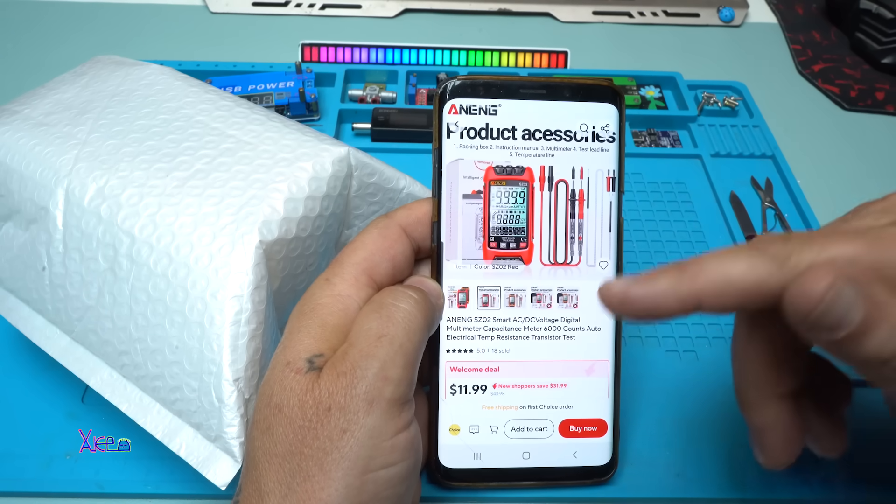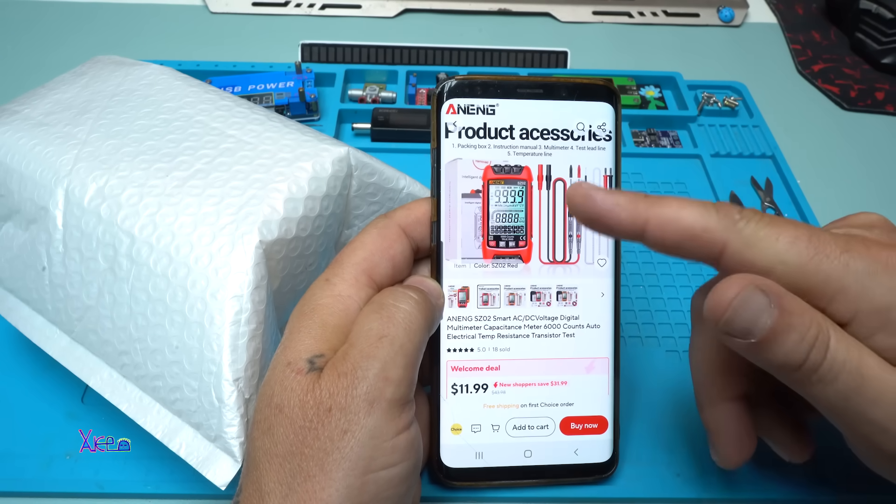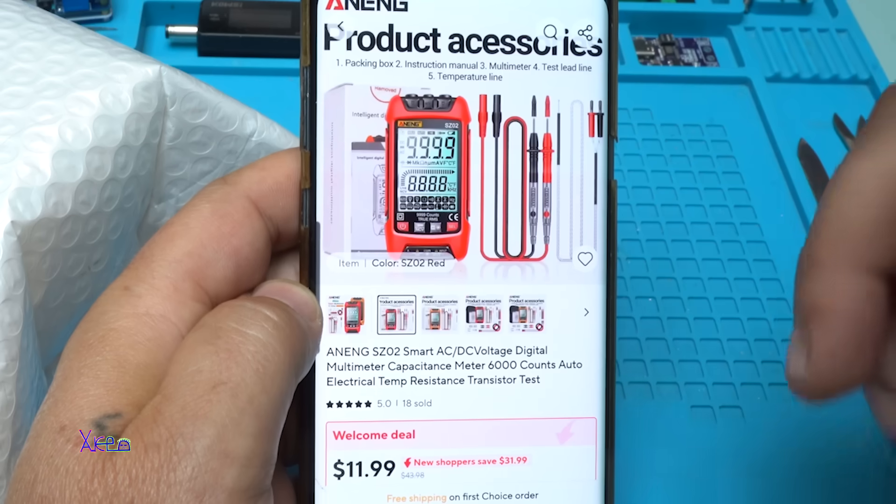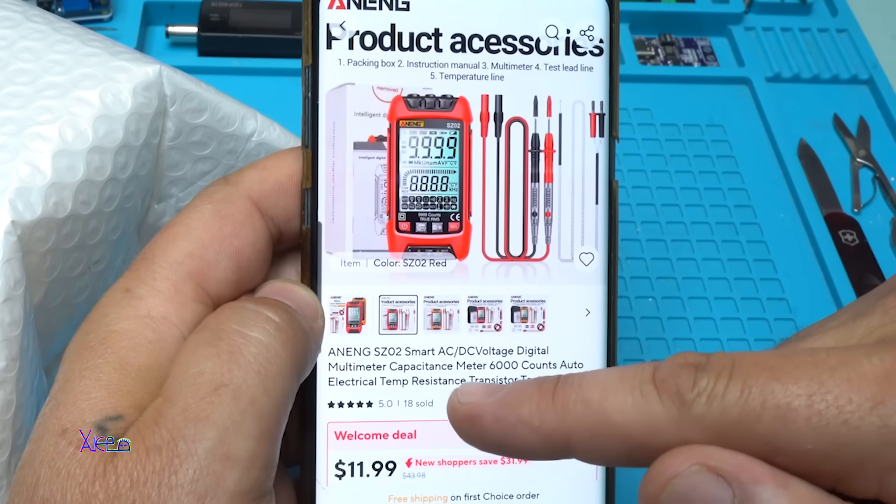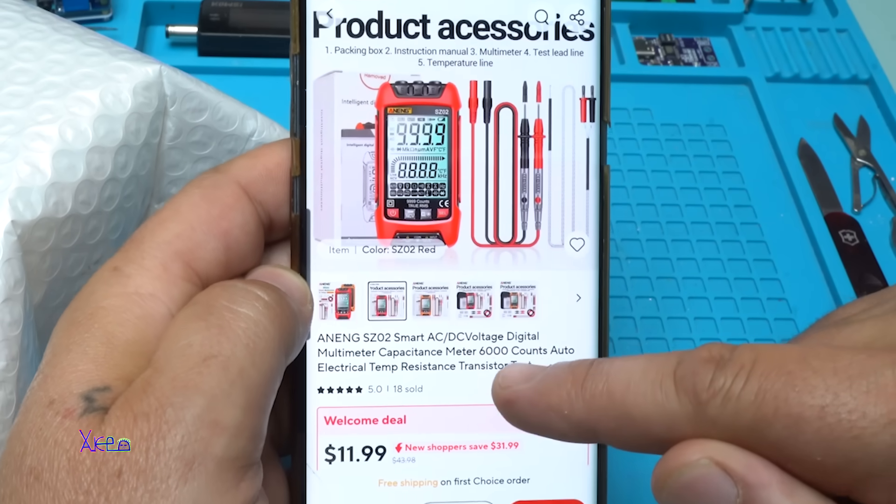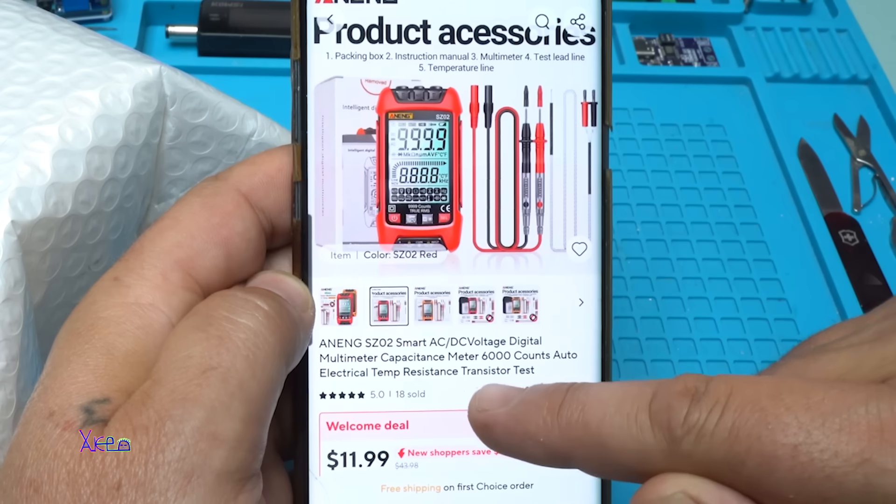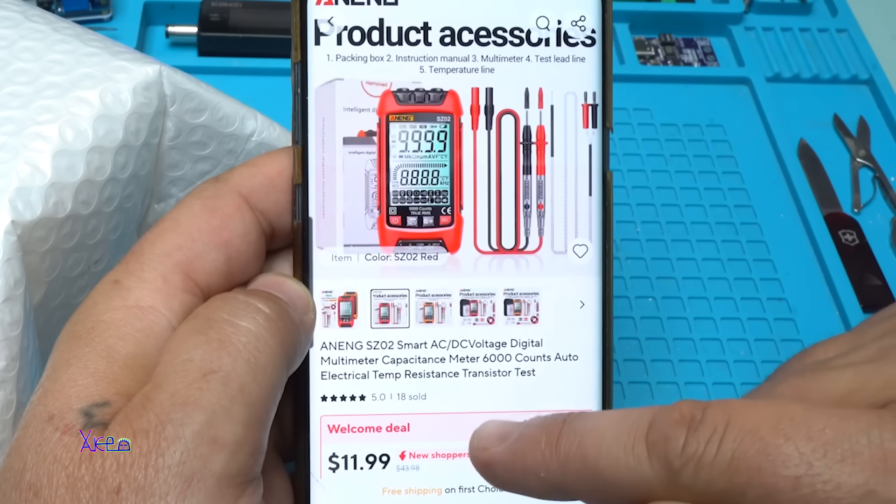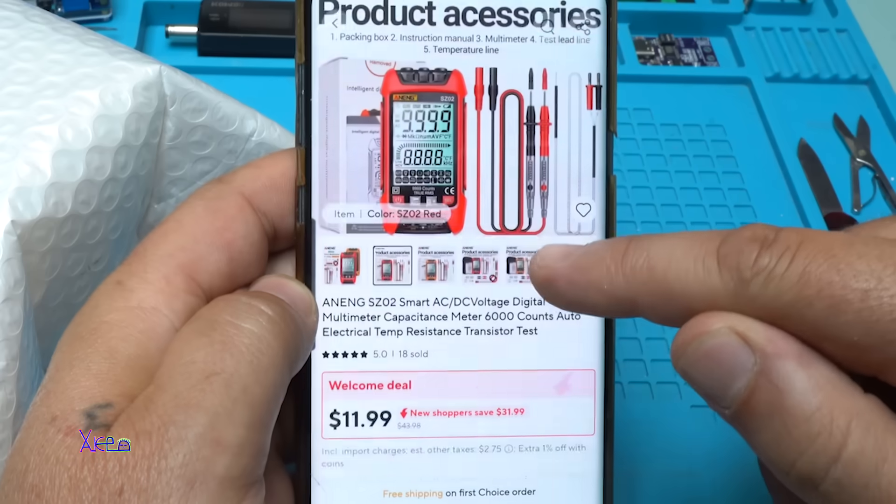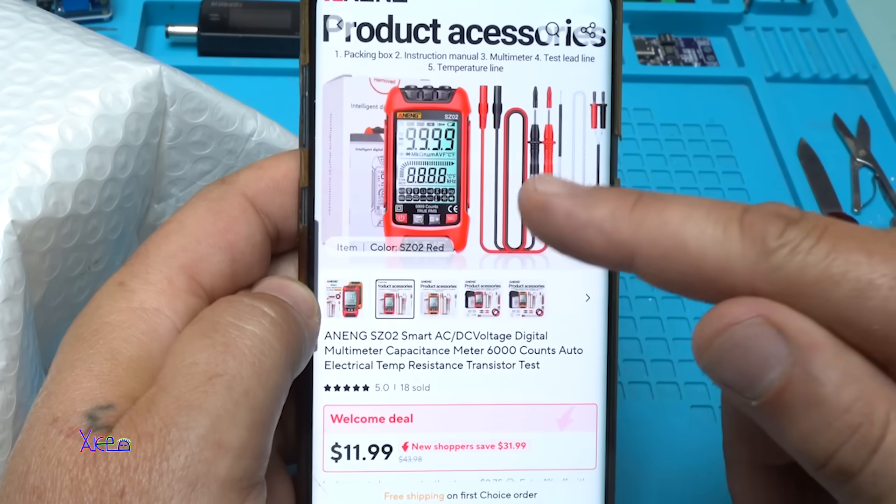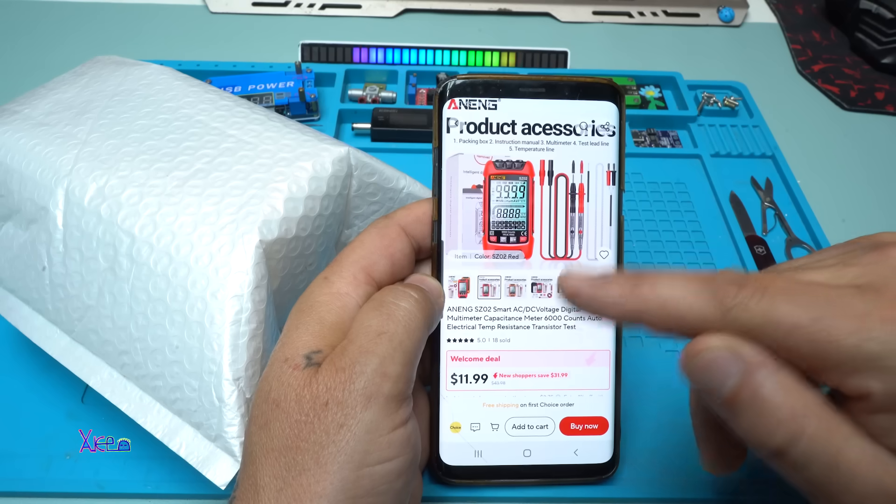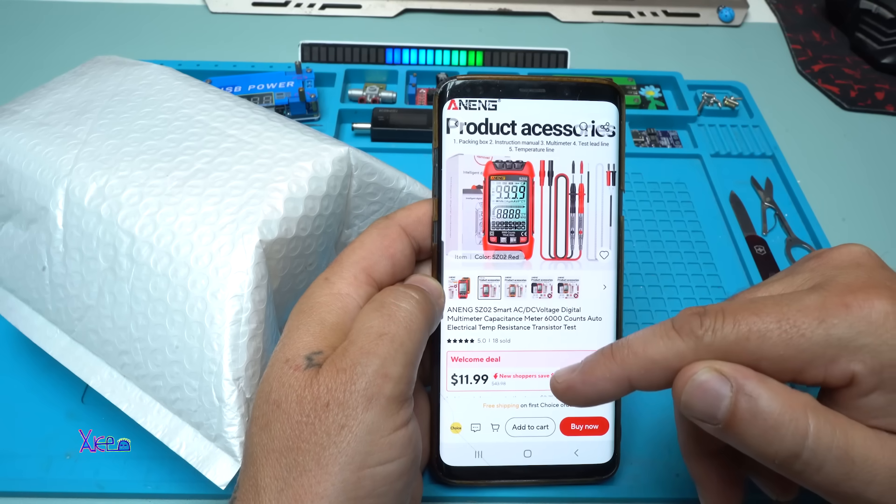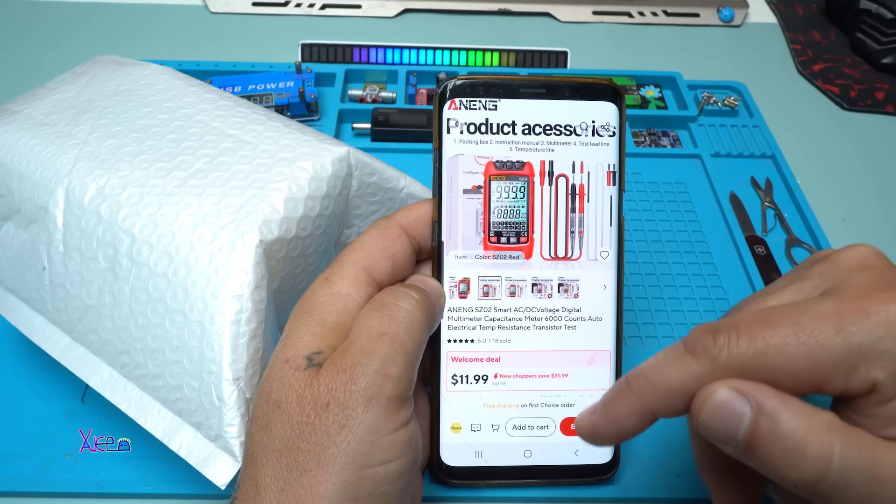Another beautiful AliExpress product. And what is it? It's a smart multimeter, brand Aneng, model CZ02, Smart AC-DC Voltage Digital Multimeter Capacitance Meter 6000 Counts Auto Electrical Temperature Resistance Transistor Test. And the price for this unit is starting from 10 US Dollars to 20 US Dollars, depends on where you are living, in which country.